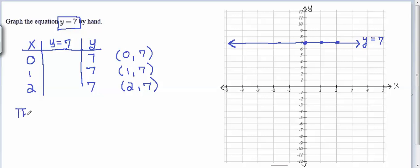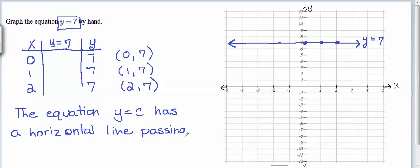So an equation of the form, we can say the equation y equals, let's use the variable c to represent any number there, any number you want. If your equation just looks like y equals some number, the equation y equals c has a horizontal line passing through 0, c as the graph. Maybe a better way to say that would be to say, to graph the line y equals c, draw a horizontal line passing through 0, c.